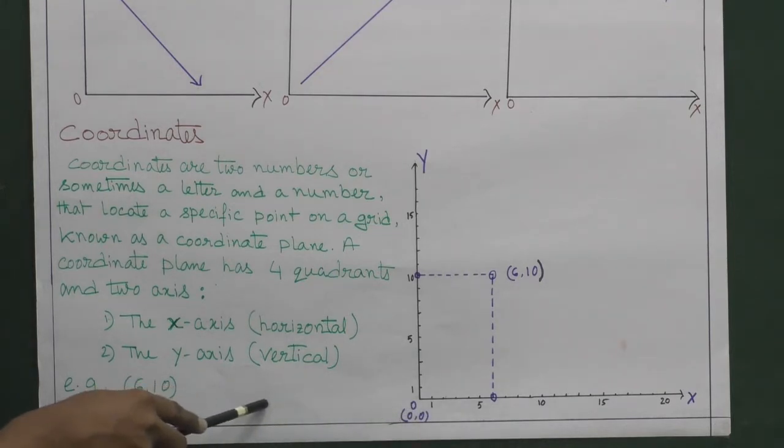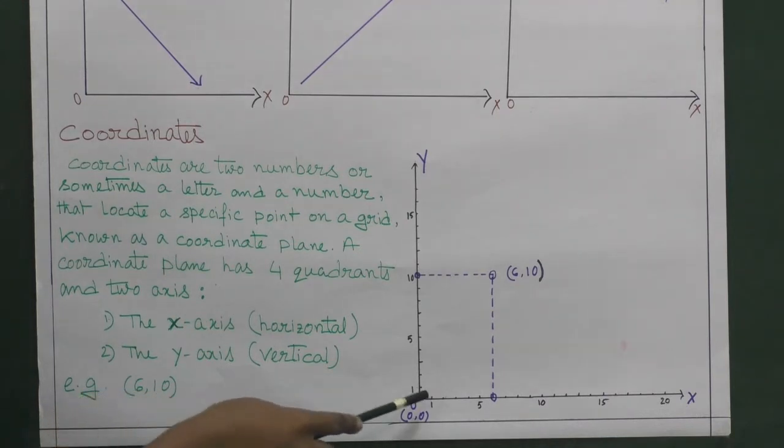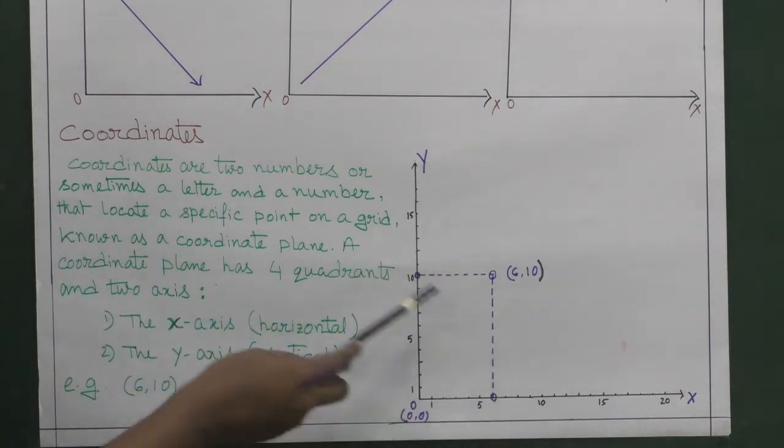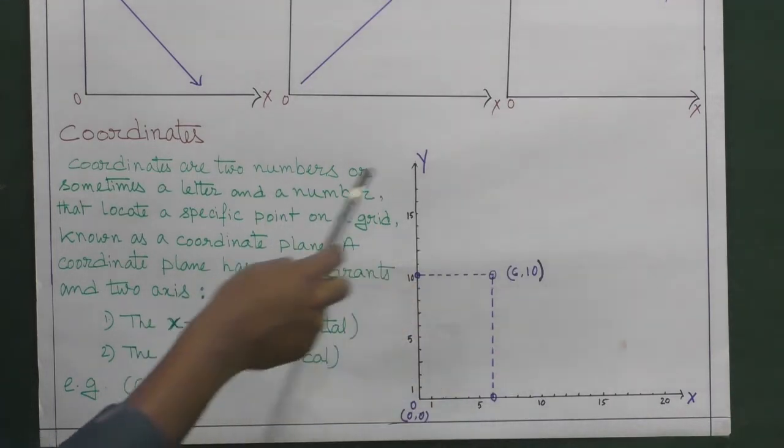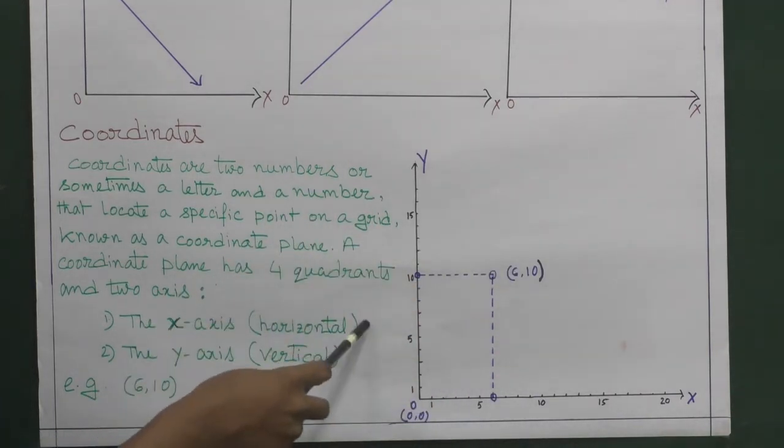Similarly, if we extend the y-axis below 0 point, then it will go down and be considered as negative y-axis. That means here we can see two axes are there which can divide the whole coordinate plane into four quadrants.